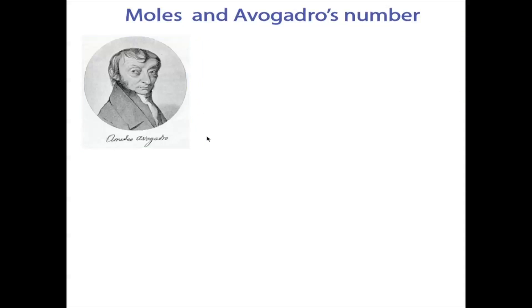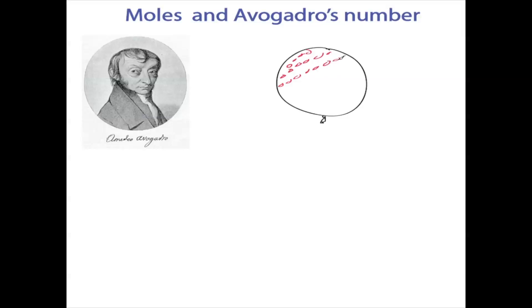We're going to talk about moles and Avogadro's number, or constant, and I'll explain the difference between the number and the constant. First, let me introduce Amadeo Avogadro. He theorized the number of particles in a given volume — for example, a balloon — and said the number of particles in that balloon would be proportional to its volume, regardless of the substance.